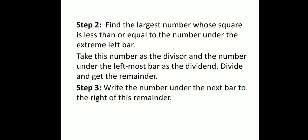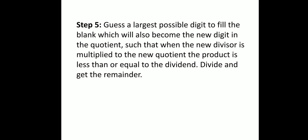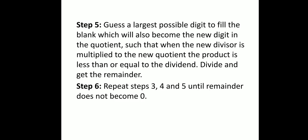Step 3 is: write the number under the next bar to the right of this remainder. Step 4 is: double the divisor and enter it with a blank on its right. Step 5 is: guess the largest possible digit to fill the blank, which will also become the new digit in the quotient, such that when the new divisor is multiplied by the new quotient digit, the product is less than or equal to the dividend. Divide and get the remainder. Step 6 is: repeat steps 3, 4, and 5 until the remainder does not become 0. We are supposed to do all these 6 steps to find the square root of a decimal number.